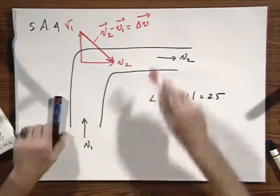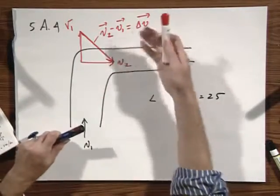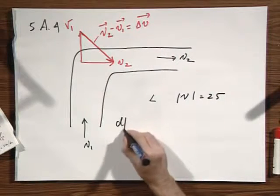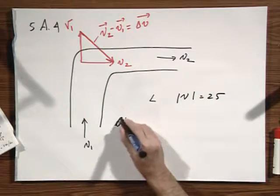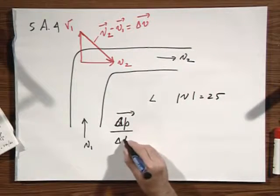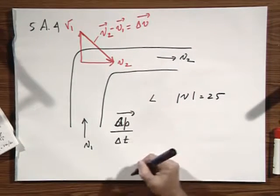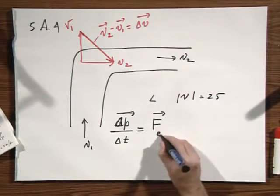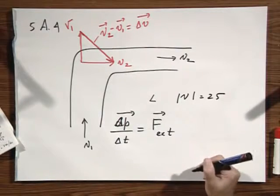If there is a change in velocity, there must be a force on the system. Remember, delta P over delta T, which is the change of momentum per unit time, equals the external force.